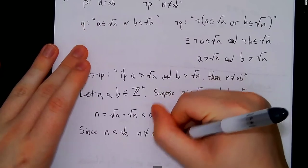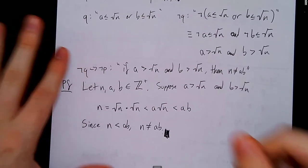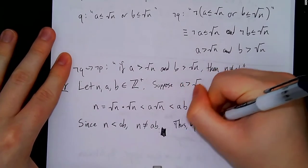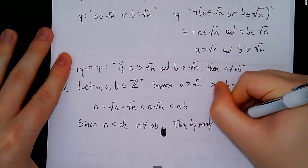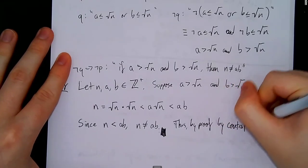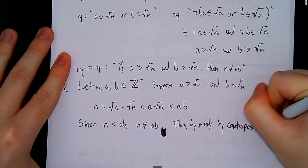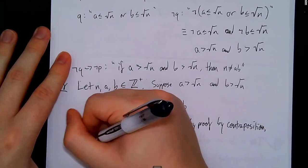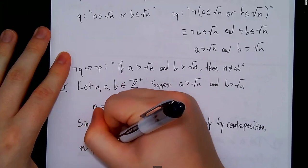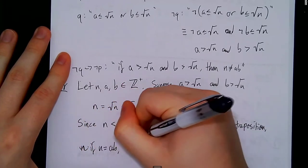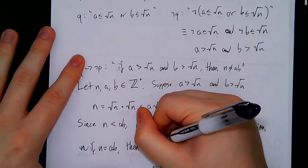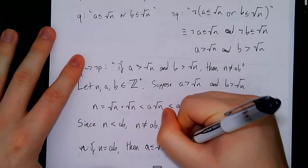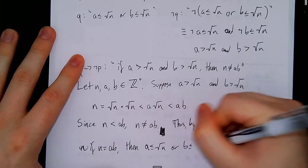I completely forgot the last step, so I'm going to scratch out that QED. And we'll say: thus, by proof by contraposition, if n equals ab, then a is less than or equal to the square root of n, or b is less than or equal to the square root of n.